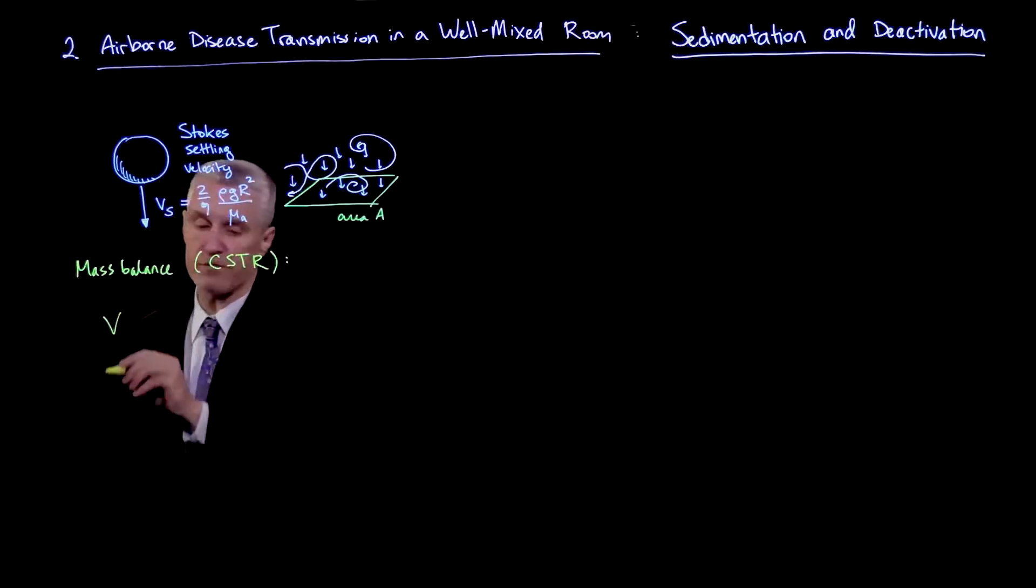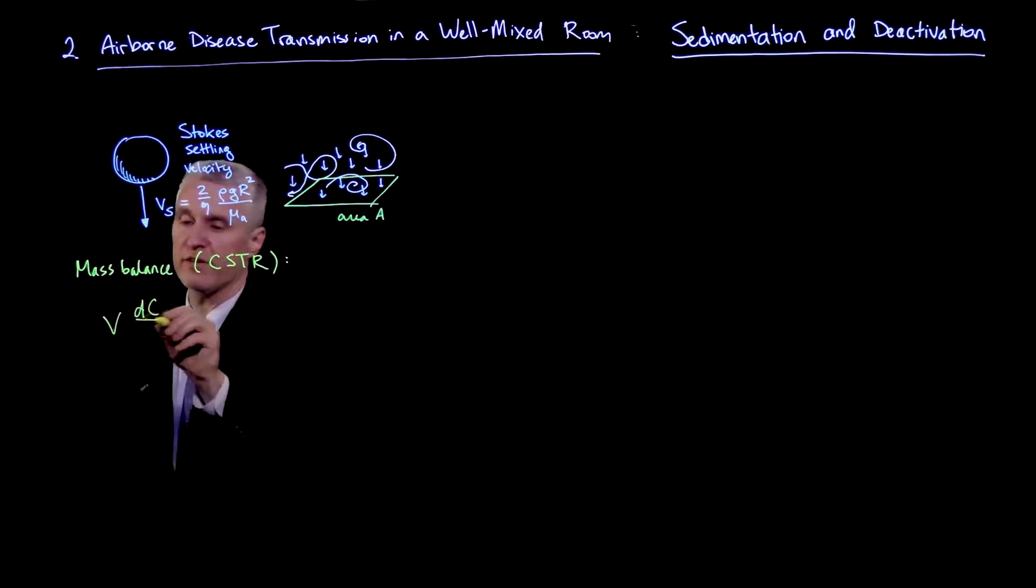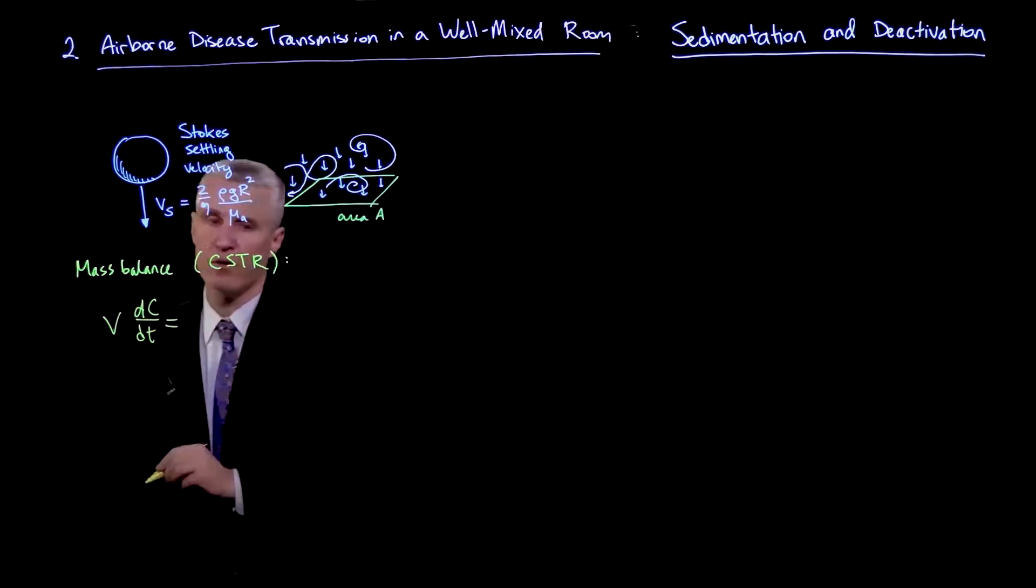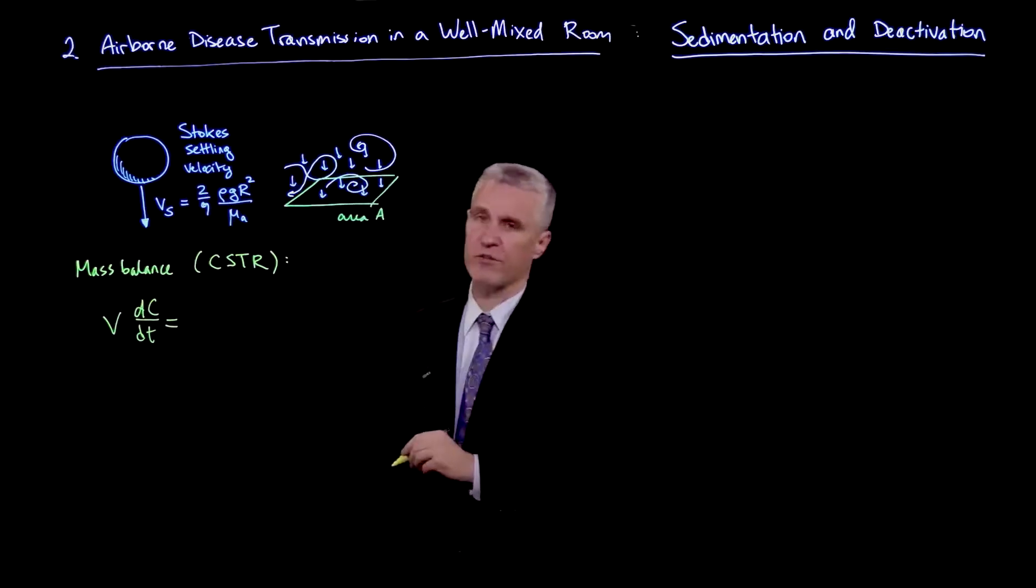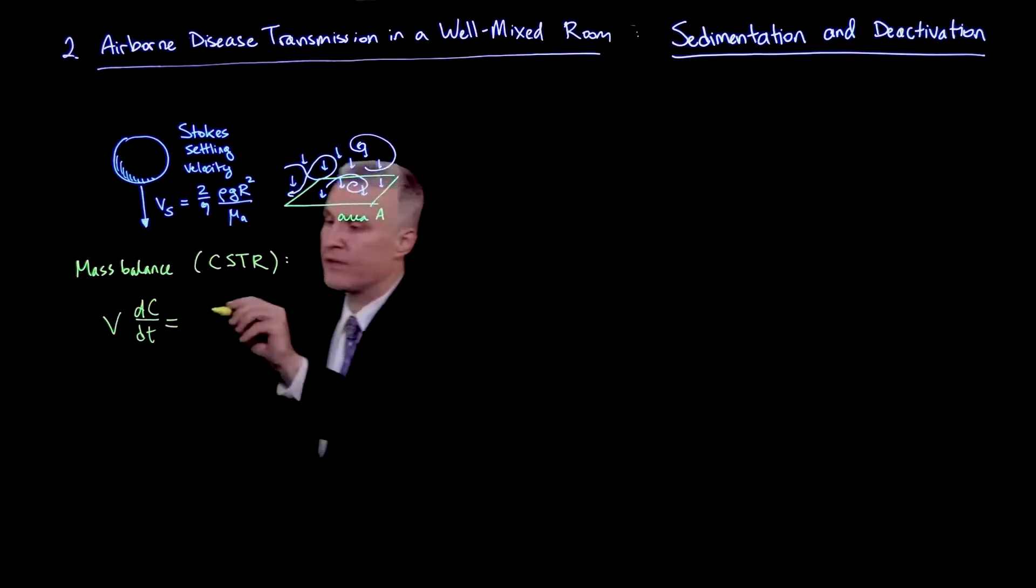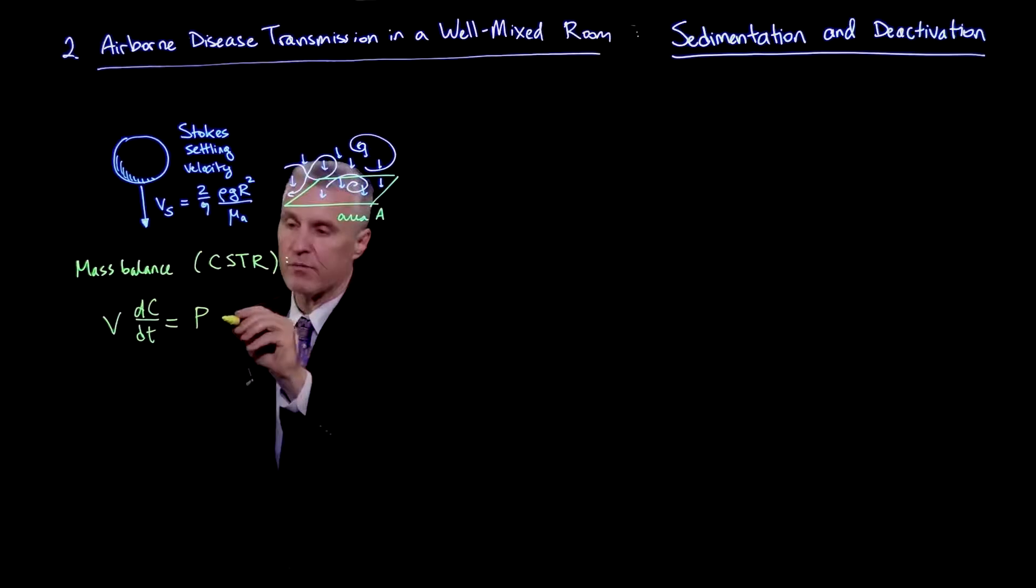And now with all the effects we're including, it's starting to look more like actual modeling of chemical reactors and chemical plants by this method. So the mass balance tells me that the volume of the room times dC/dt, where again, C is the virion concentration per volume in the air,